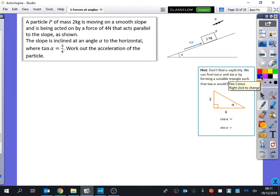The slope is inclined at an angle α to the horizontal where tan α equals 3 over 4. The temptation is probably to do the inverse tan of 3 over 4 to find the angle. That's the temptation, but that is not what we do for these questions. The hint box says do not find α explicitly. We can find cos α and sin α by forming a suitable triangle.